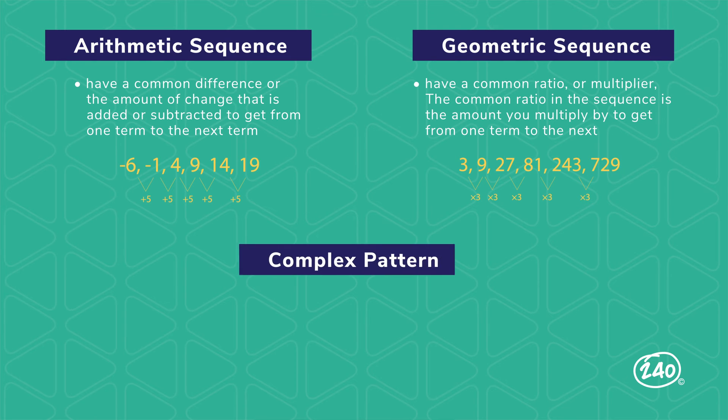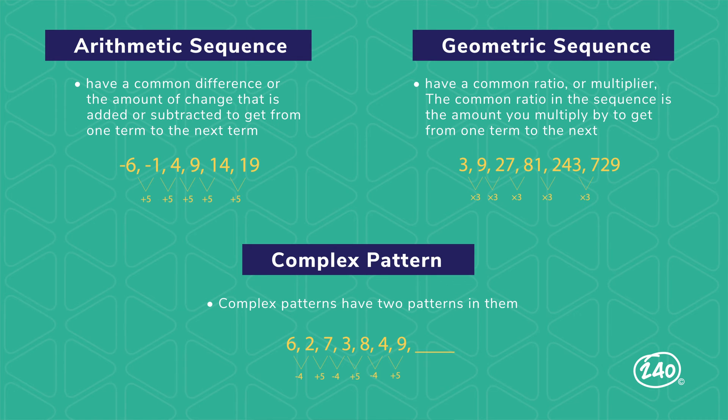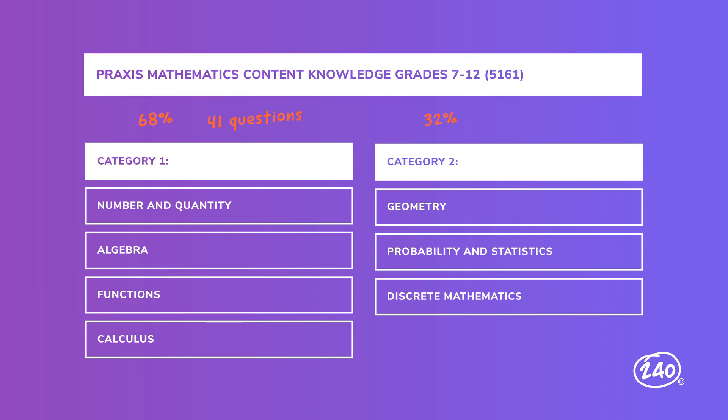Finally, we've got complex patterns. In a complex pattern, you're going to have to identify two separate patterns. So looking at this number sequence, 6, 2, 7, 3, 8, and so on. To go from 6 to 2, you have to subtract by 4. Then when we go up to 7, you need to add 5. And you go back and forth between those actions, subtract 4, add 5, subtract 4, add 5, etc. And that's it. We made it through all the subcategories.